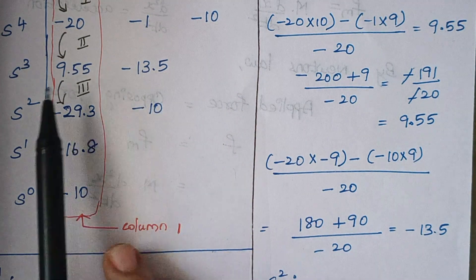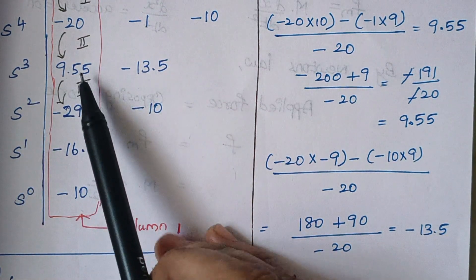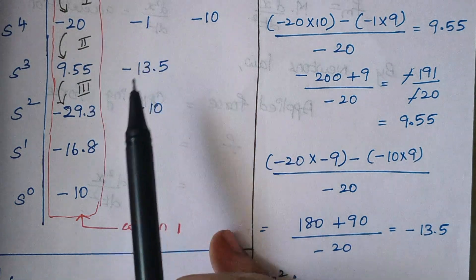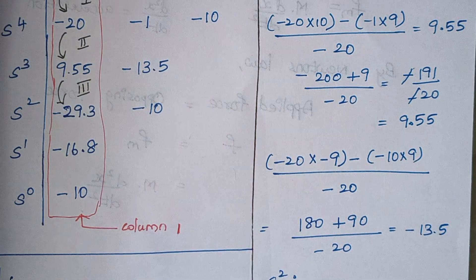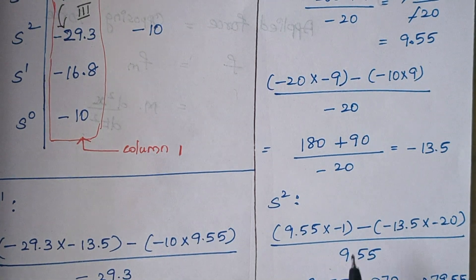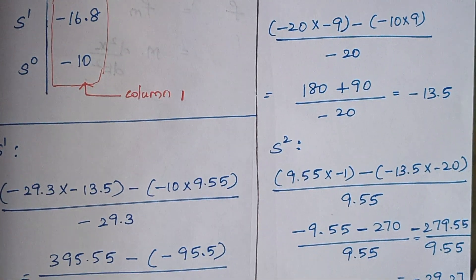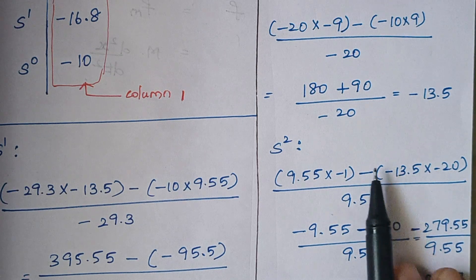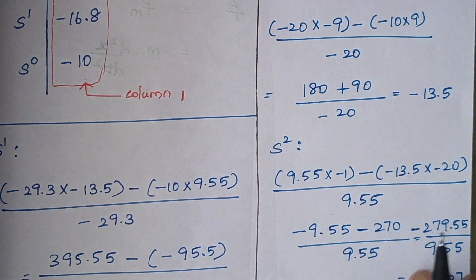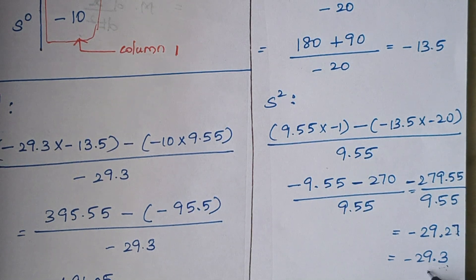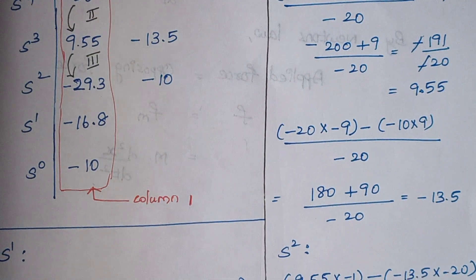Now we find the S^2 row. The first element is: (9.55 × (−1) − (−13.5) × (−20)) / 9.55. Solving: 9.55 × (−1) = −9.55, and minus of minus 13.5 into minus 20 gives an additional negative term. The result is approximately −29.27, which we round to −29.3. So −29.3 is the first element of the S^2 row.